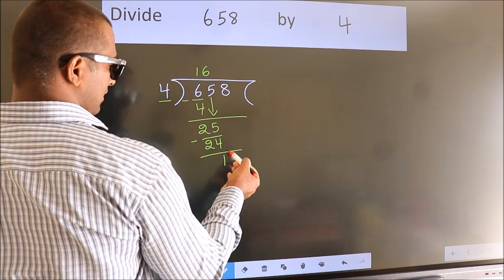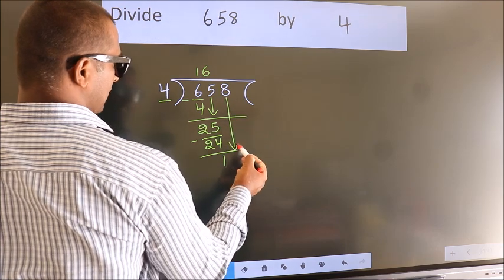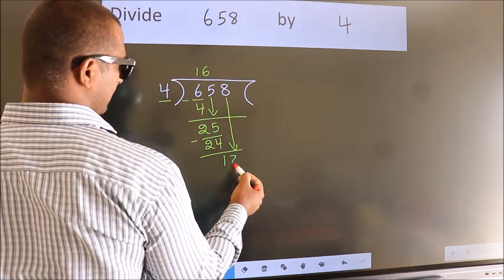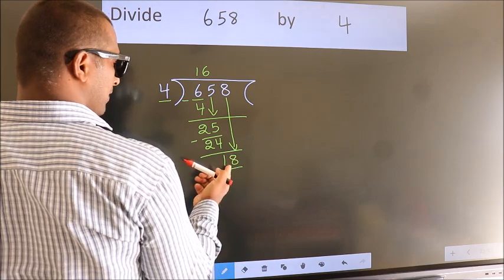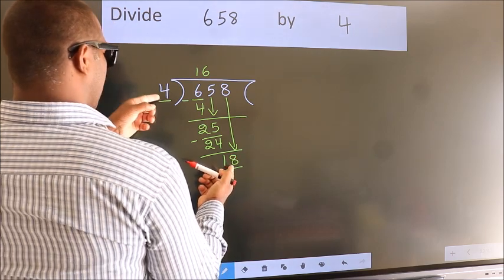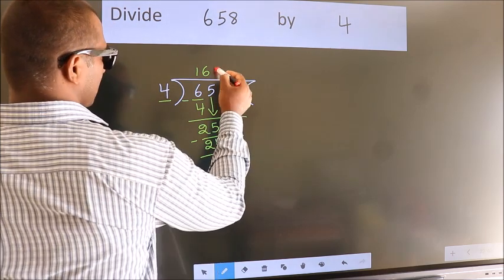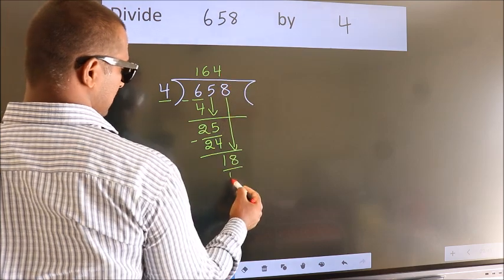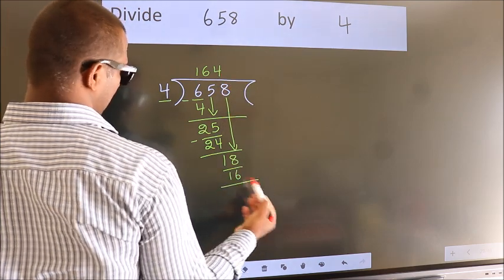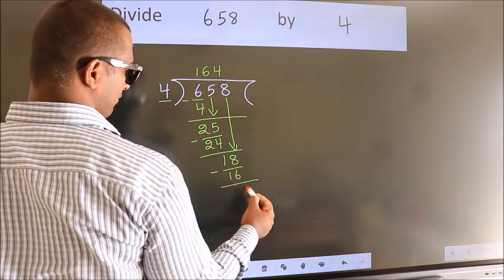After this, bring down the beside number. So 8 down, 18. A number close to 18 in the 4 table is 4 times 4, 16. Now we subtract. We get 2.